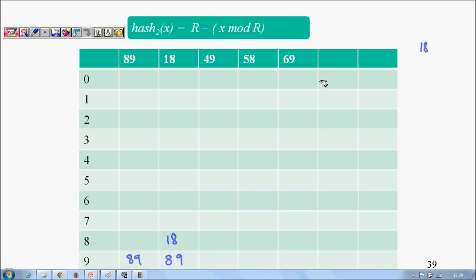Next, 49 comes. 49 mod 10 is 9, and there is already an element 89 here, so we will try out h_1(49), which will be 9 + f(1). I need to calculate hash2(x), which will be 7 - (49 mod 7). 7 - 0, which is 7. So 9 + 7 mod 10, 16 mod 10, which is 6. It will come here at position 6.